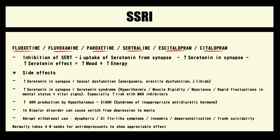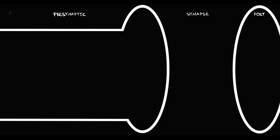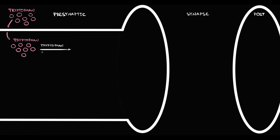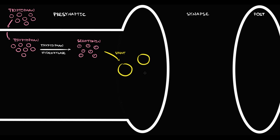To explain the mechanism of action of these drugs, we have to know how serotonin neurons work. We have a presynaptic neuron, synapse, and postsynaptic neuron. Serotonin neurons uptake tryptophan. Once tryptophan appears inside the neuron, it undergoes hydroxylation by the rate-limiting enzyme tryptophan hydroxylase, with formation of serotonin. Once serotonin is formed, vesicular monoamine transporter puts serotonin inside the vesicles, and in this form, serotonin is stored inside the neuron.